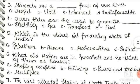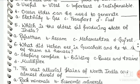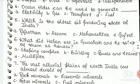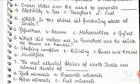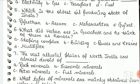Question six: what did you see in Guwahati and what do you think of them as — first option: shopping complex, second option: building, third option: buses and trains, fourth option: multiplex.